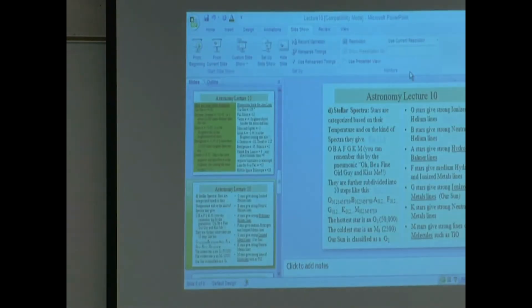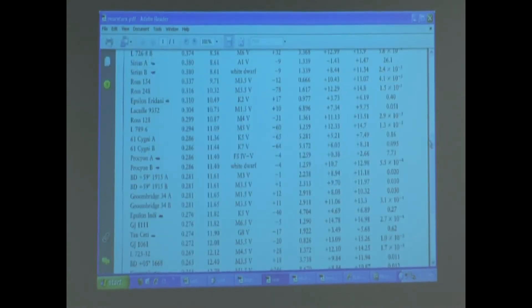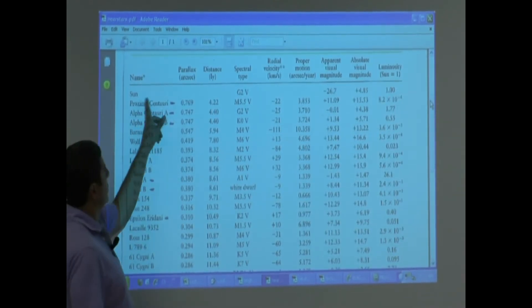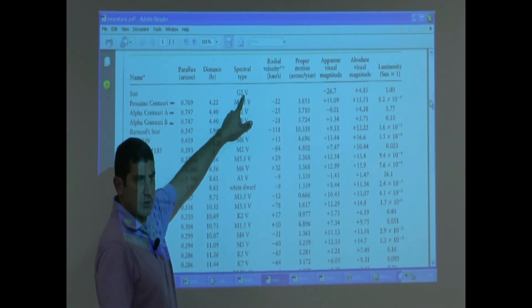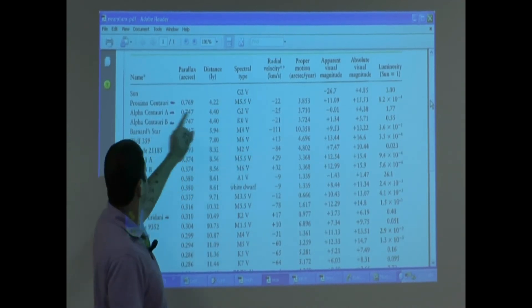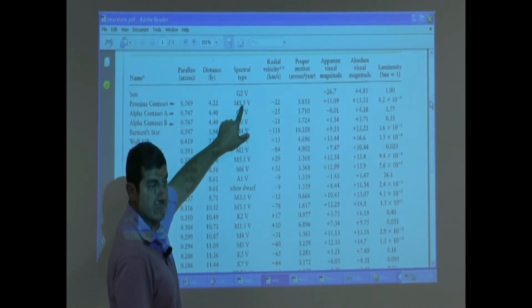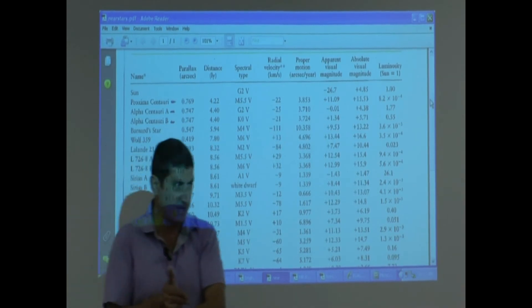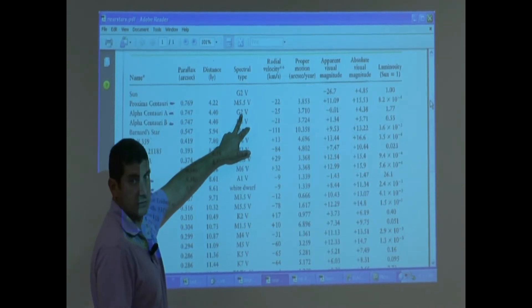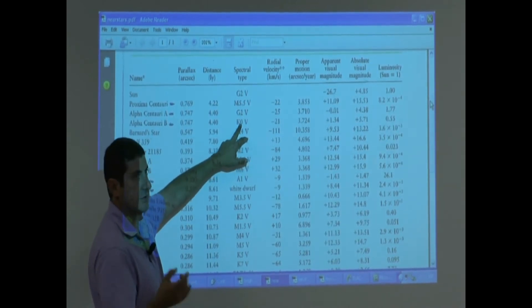If we look at that table, is there a column that shows us the spectral type? Oh yeah, there it is, G2. Don't worry about this letter V yet. I'll tell you later on what that means. But just look at this one here. M5. Is this a star colder or hotter than the sun? M5. Just remember, oh be a fine girl and kiss me. M is the last one, right? So colder than the sun. G2, same temperature as the sun, you see?